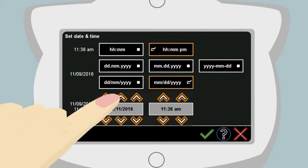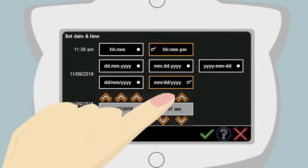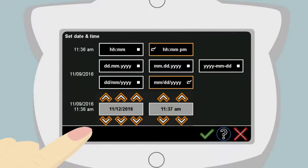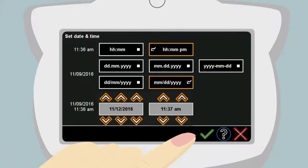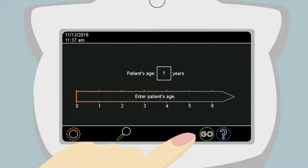Anna uses the up and down arrows to select today's date and time. When the date and time have been properly entered, she touches the green checkmark in the lower right-hand corner. The green checkmark tells the PlusOptics device to save the changes Anna has made. The date and time will need to be set the first time the device is turned on.